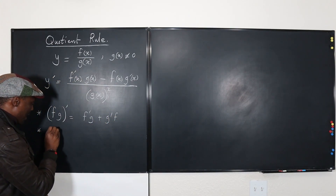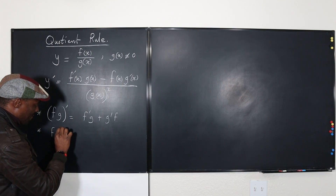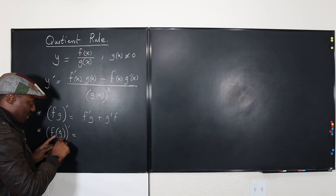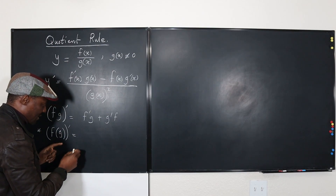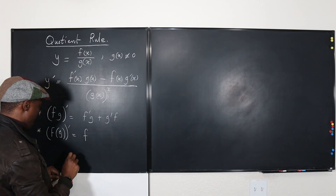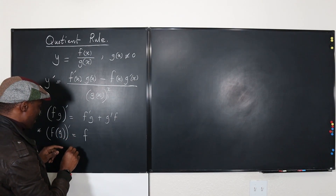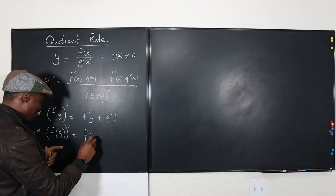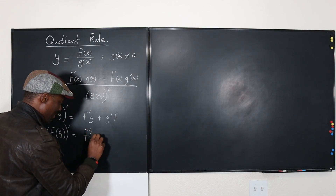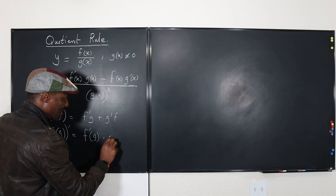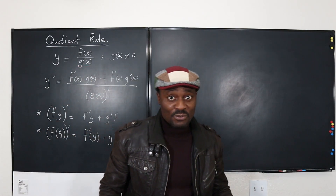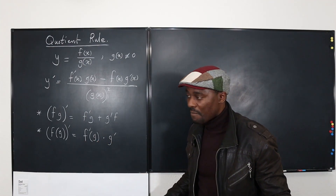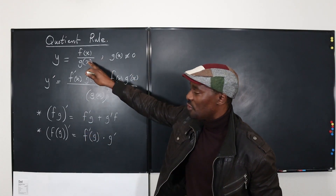And then we know that if f is a function of g, then you take the derivative of this — so this is a product and this is a chain. If f is a function of g, and g is a function of x, then the derivative is going to be f prime of g multiplied by g prime. This is the definition of the chain rule: f prime of g times g prime. And that's what we do generally. So let's use these two to do this.